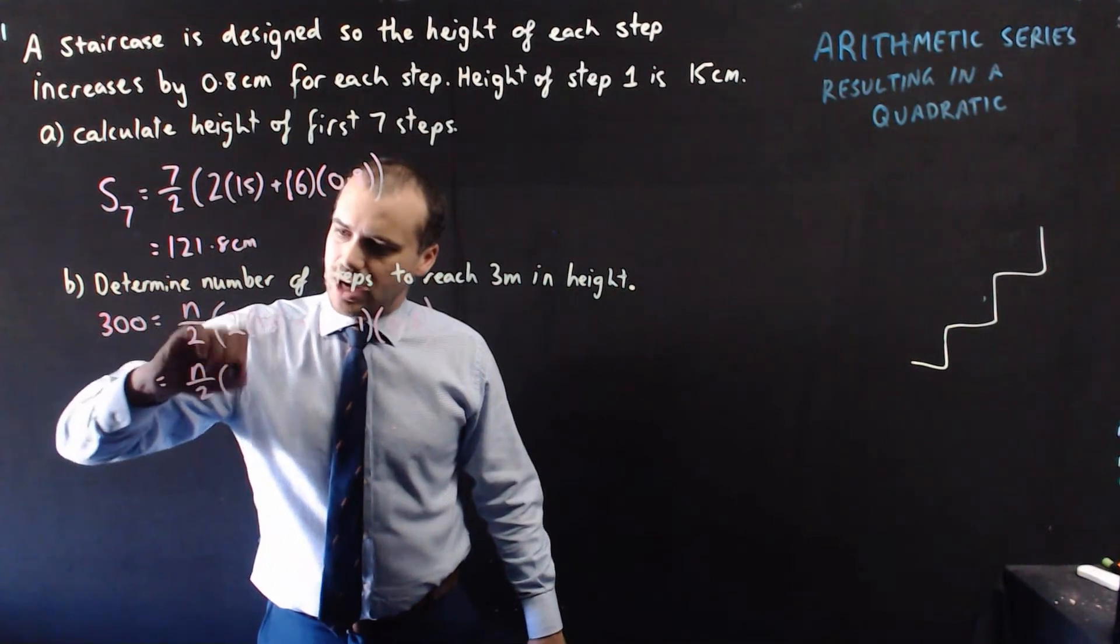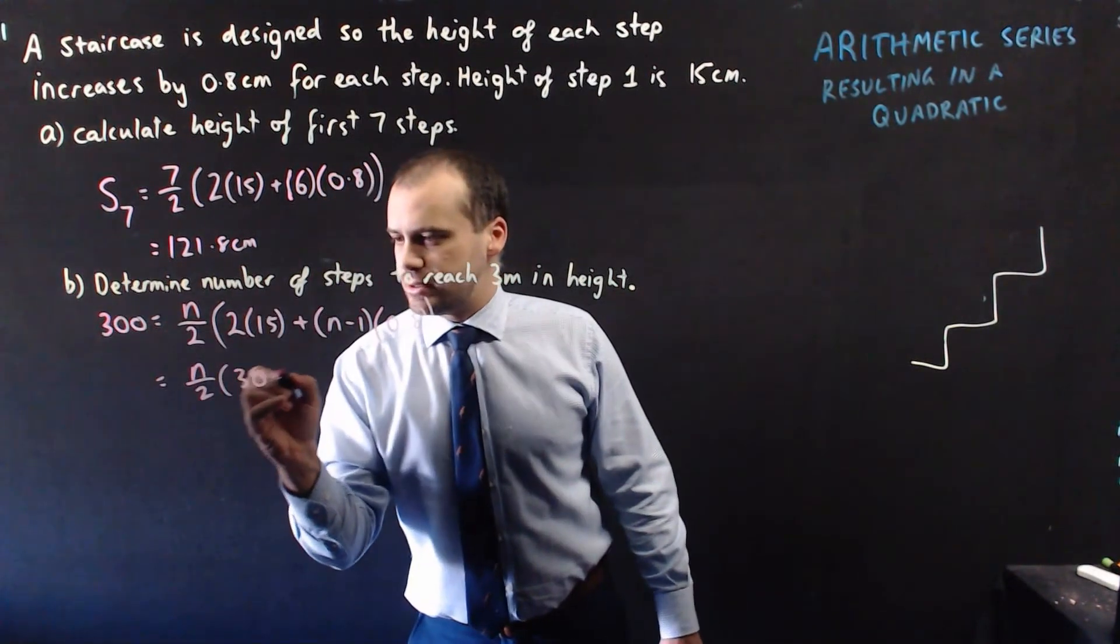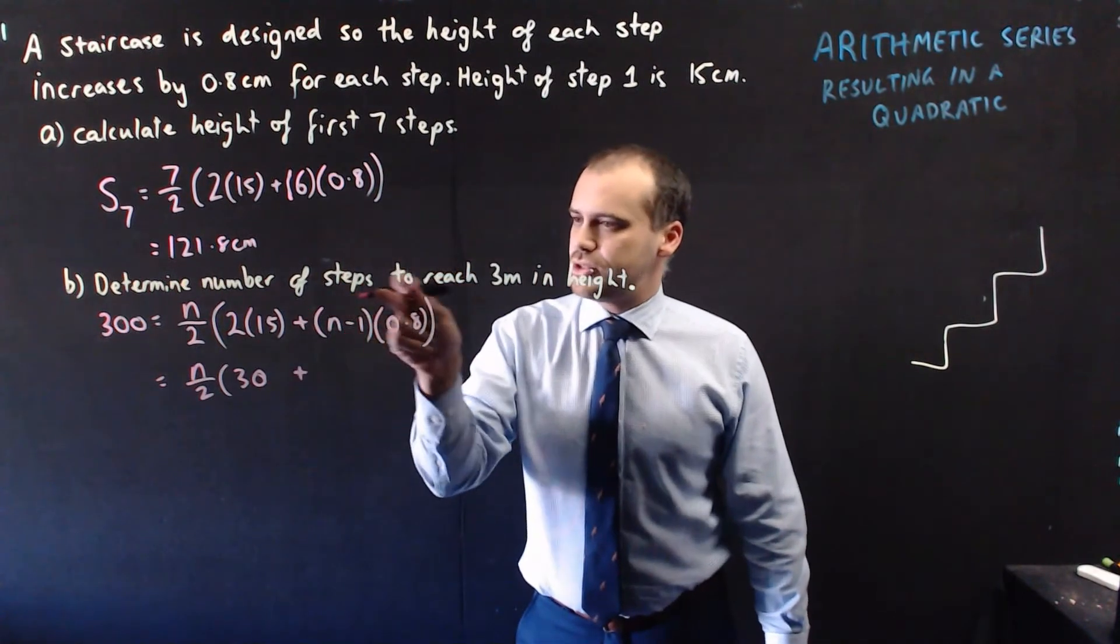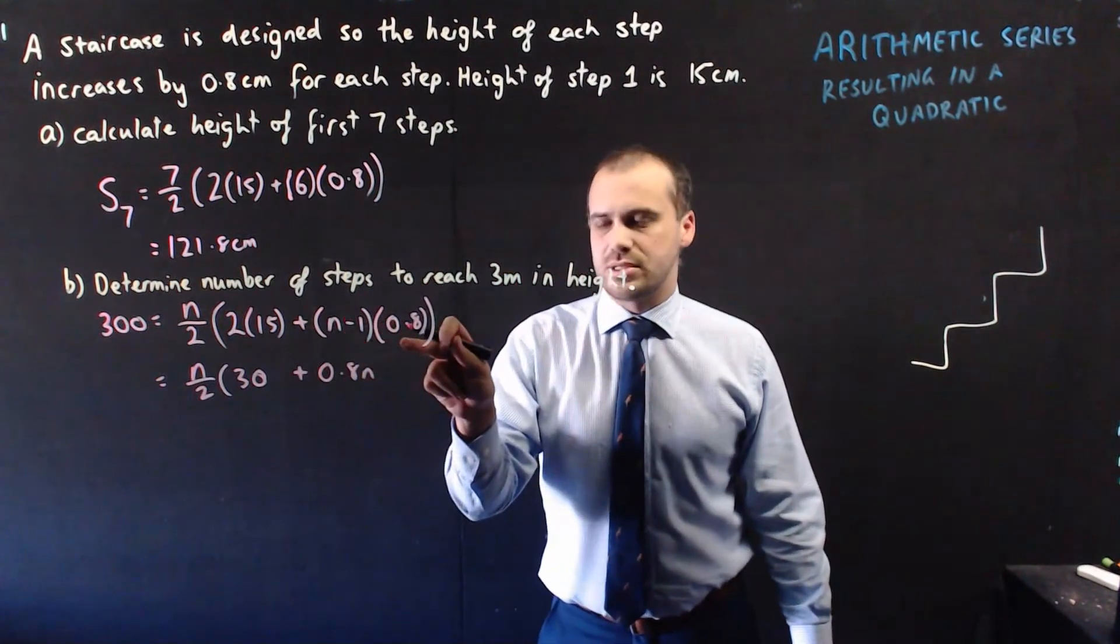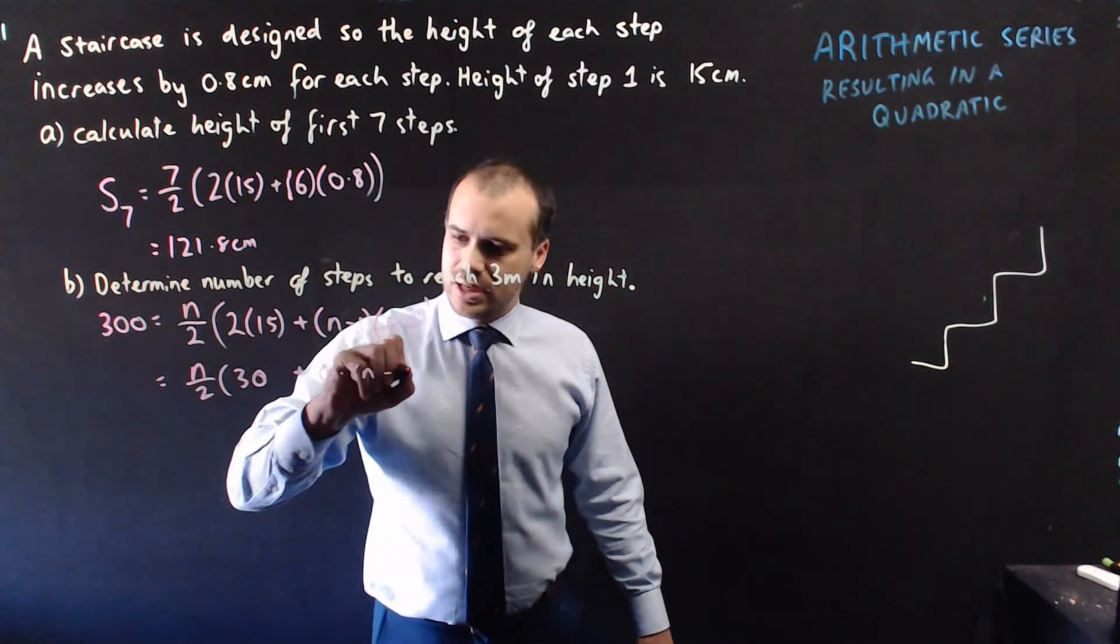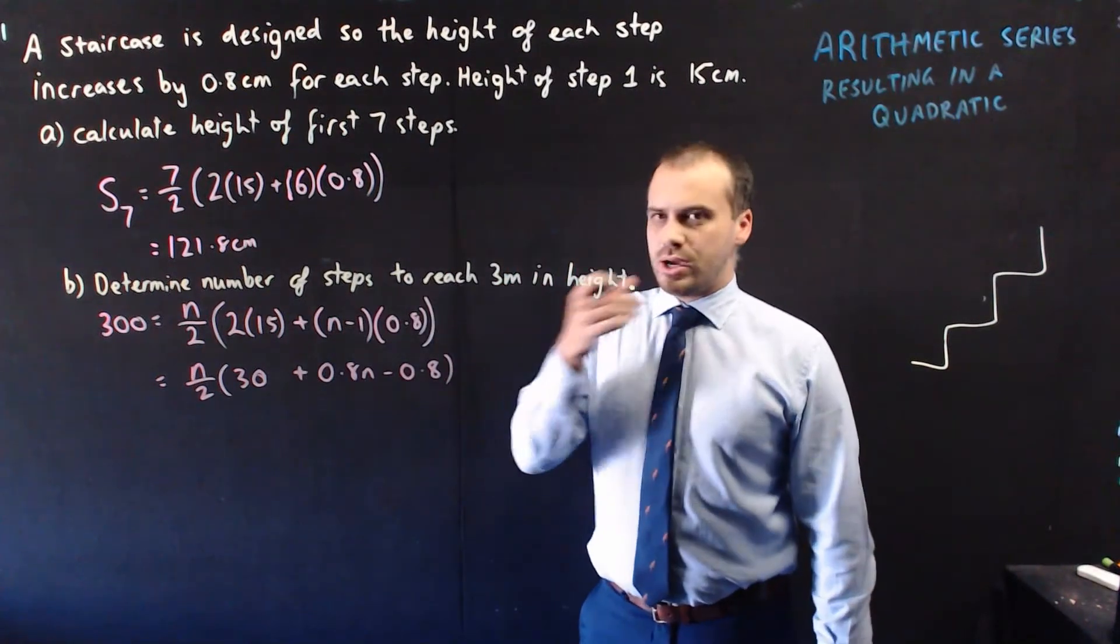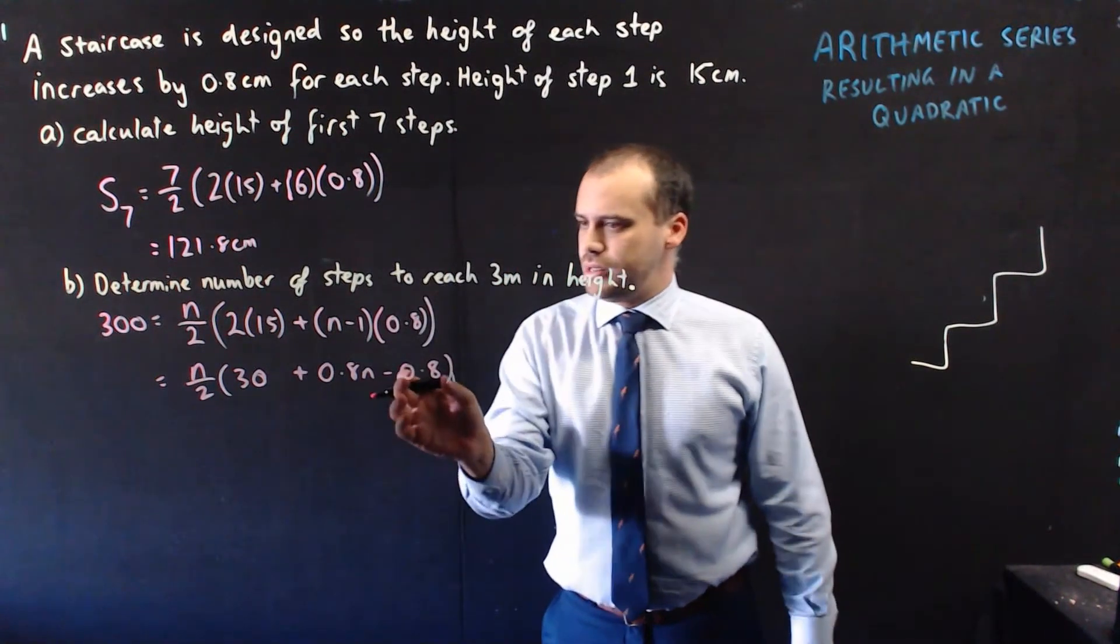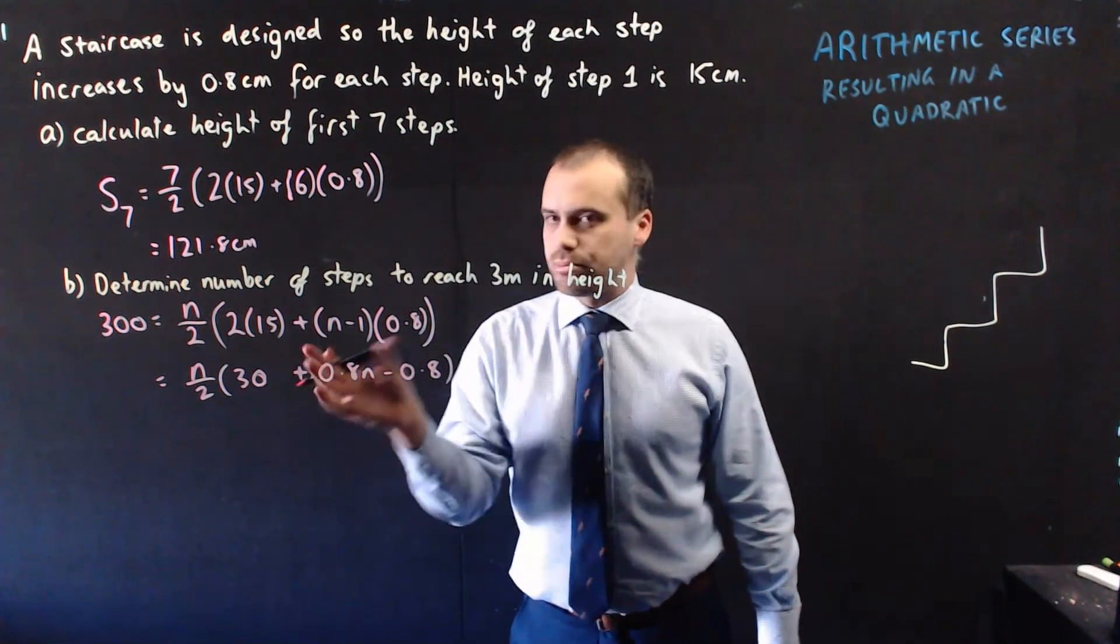We get n over 2, bracket, 2 times 15 is obviously 30, plus, I'm going to do n times 0.8, so that's 0.8n, and negative 1 times 0.8, and that's negative 0.8. Alright, now, I'm going to do two things here. One, that 0.8 and that 30, they're just numbers, so we can bring those together.